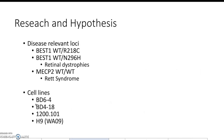The disease-relevant loci they chose include BEST1, which is associated with retinal dystrophy — a disease affecting vision — and MECP2, which is associated with Rett syndrome.